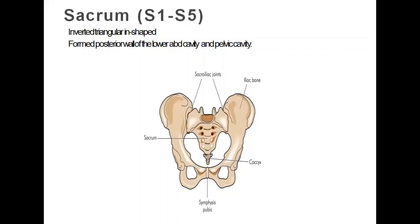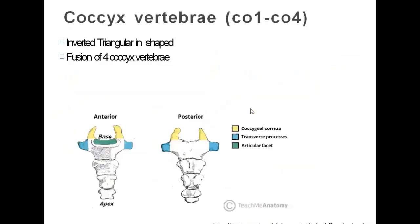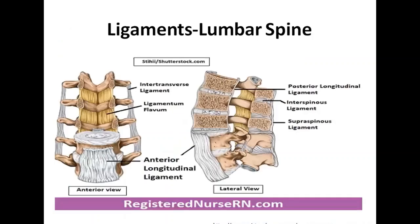The sacrum is like an inverted triangular shape and forms the posterior wall. Just below the sacrum is the coccygeal — also called the tailbone or coccyx — with four fused vertebrae. The sacrococcygeal complex forms the back wall of the pelvis. We need to learn about the lumbar spine ligaments from the anatomical point of view.